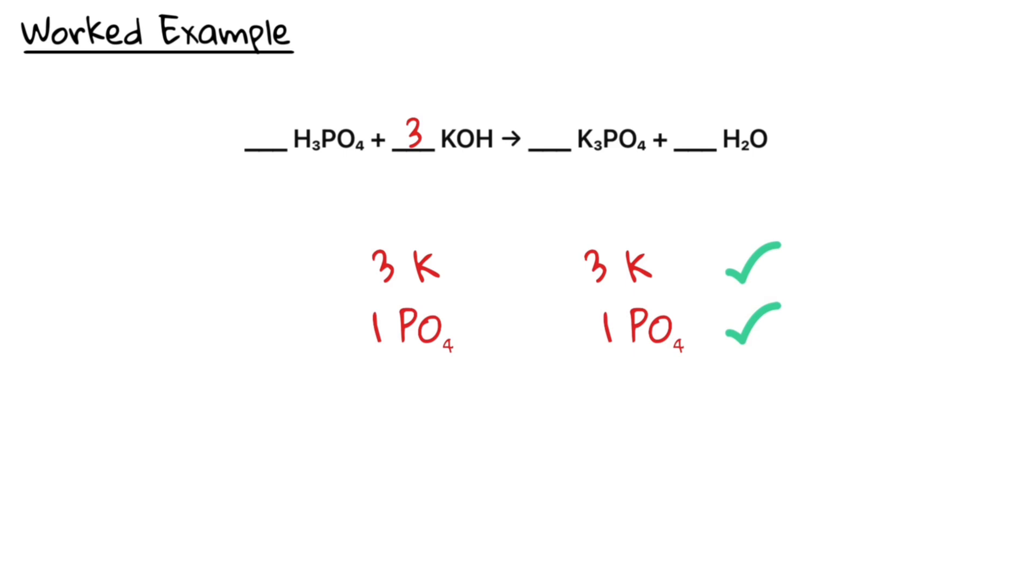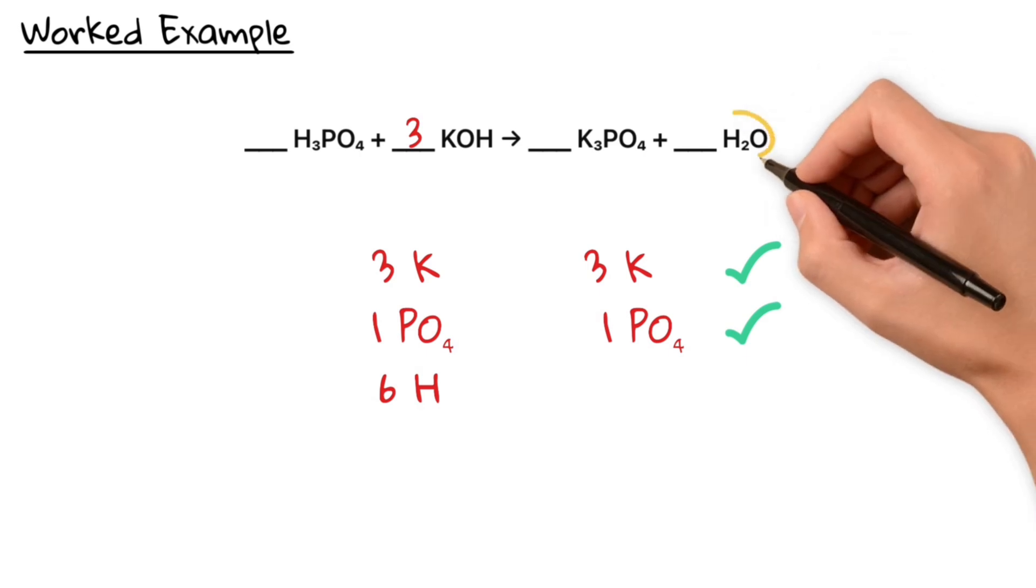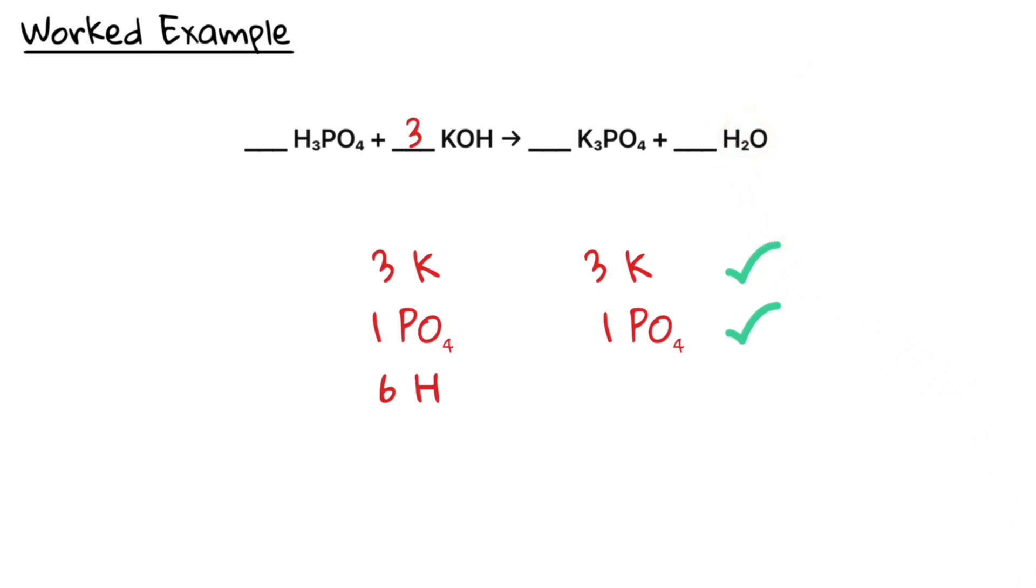Now we take a look at hydrogen. H3PO4 has three hydrogens, and 3KOH also have three hydrogens. That makes for a total of six hydrogens on the left-hand side. We need six hydrogens on the right, and since water has two hydrogens per molecule, we need three water.